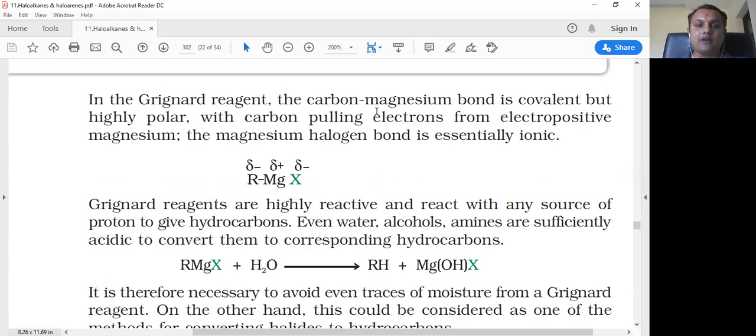The magnesium-halogen bond is essentially ionic. Mg is positive, halogen is negative. All electrons are attracted towards the halogen, and carbon pulls electrons from electropositive magnesium.